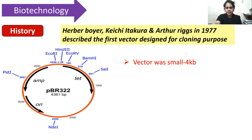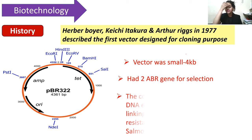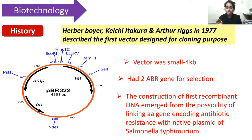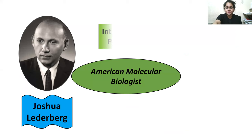The history of pBR322: Herbert Boyer, Kichi Itakura, and Arthur Riggs in 1977 described the first vector designed for cloning purposes — pBR322. It is a very small 4 kb plasmid with two antibiotic resistance genes for selection. The first recombinant DNA emerged from linking a gene coding for antibiotic resistance with the native plasmid of Salmonella typhimurium. Joshua Lederberg introduced the term 'plasmid' in 1952.